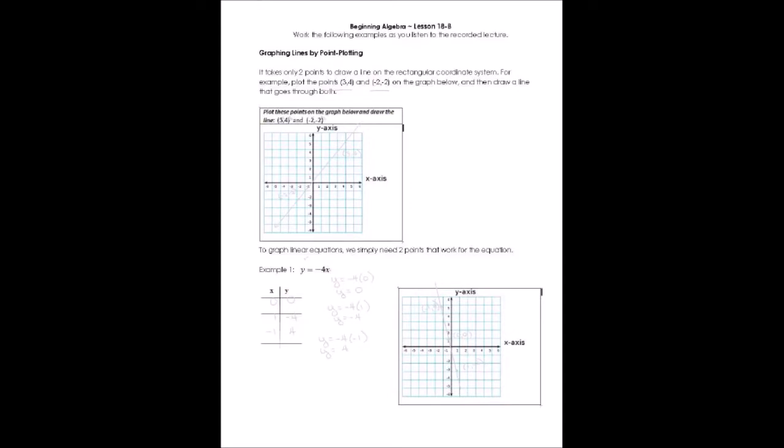If we're going to graph a line on the rectangular coordinate system, we really have to identify two points on that line. Any two points can identify a line because we can draw a straight line through those two points, and it's the only line that can go through both of those points.